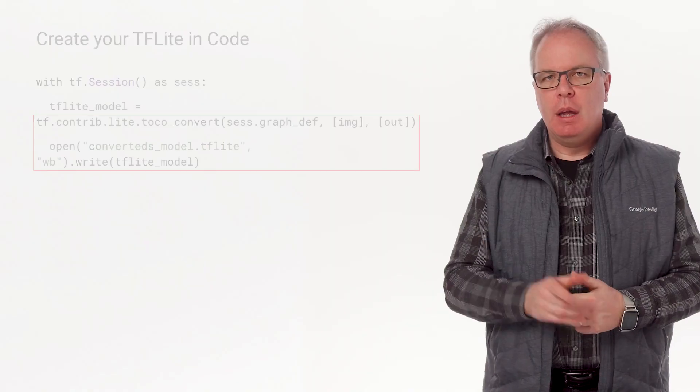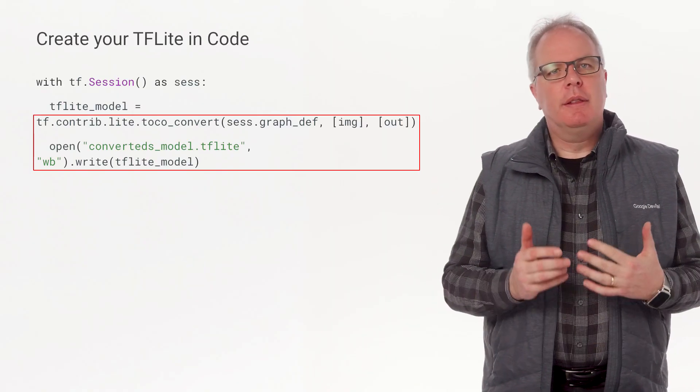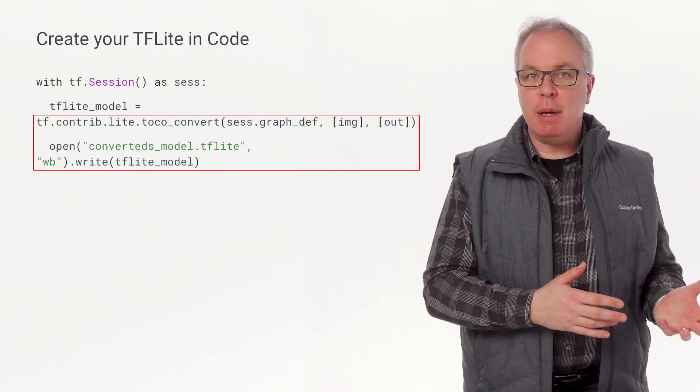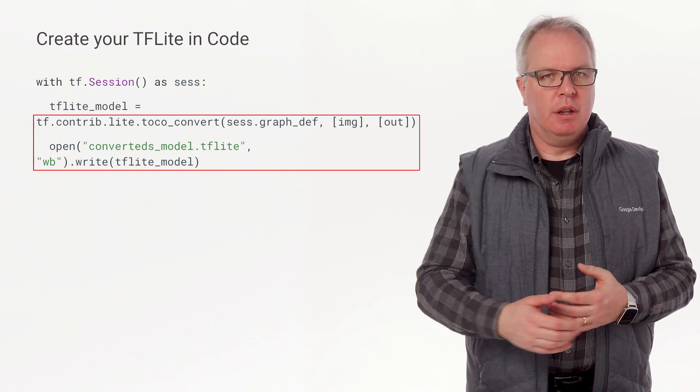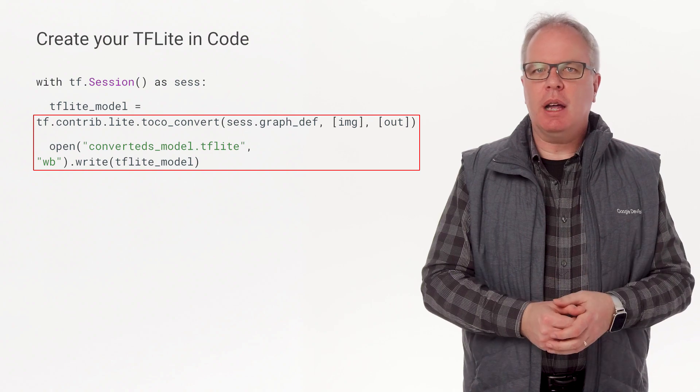The previous section is great if you've done a lot of work to train models and either don't want to rerun the code and retrain them, or maybe don't have access to the original code and data. But if you do have access to the code, you can also go straight to the TensorFlow Lite creation process in your code as part of the training. Here's a sample piece of code that converts a tensor containing an image from the session's graph def into a TF Lite object. As you can see, it's pretty straightforward — it's a single line.